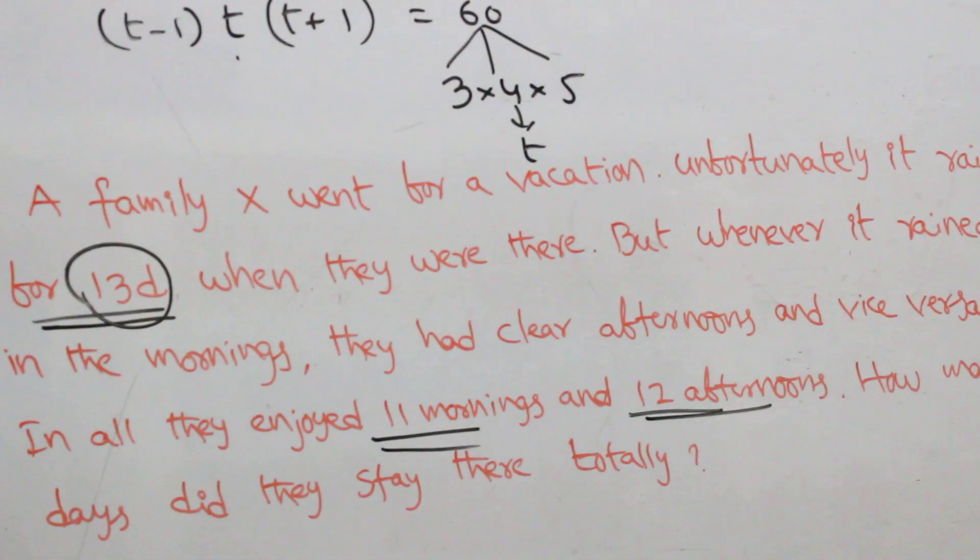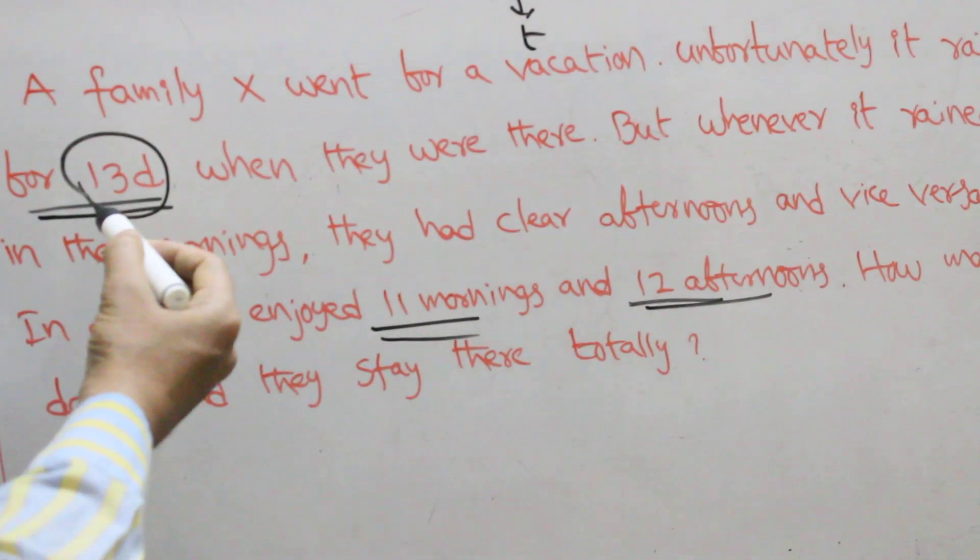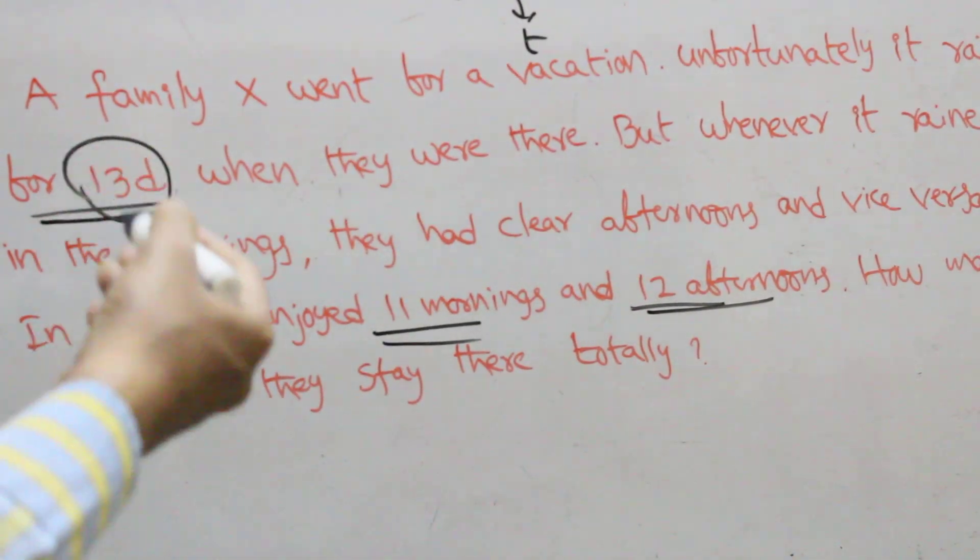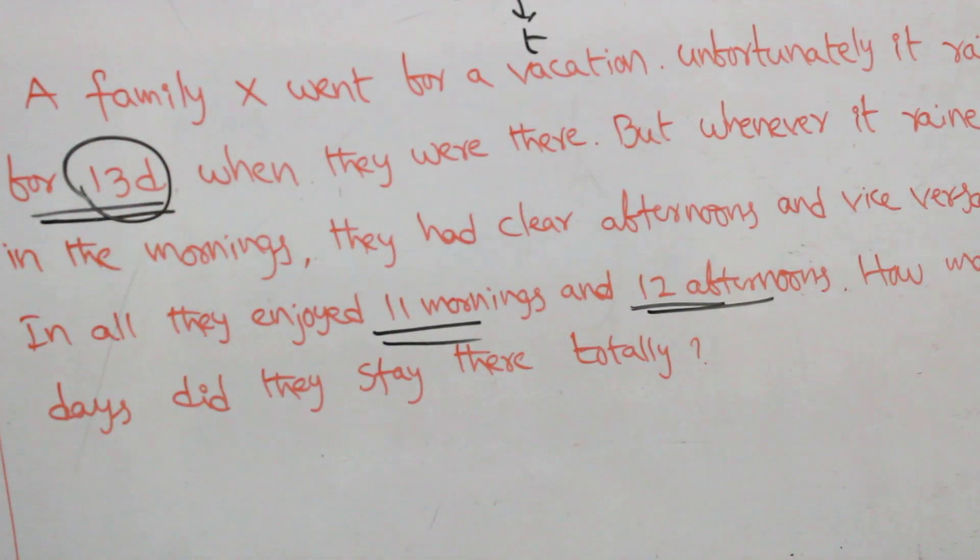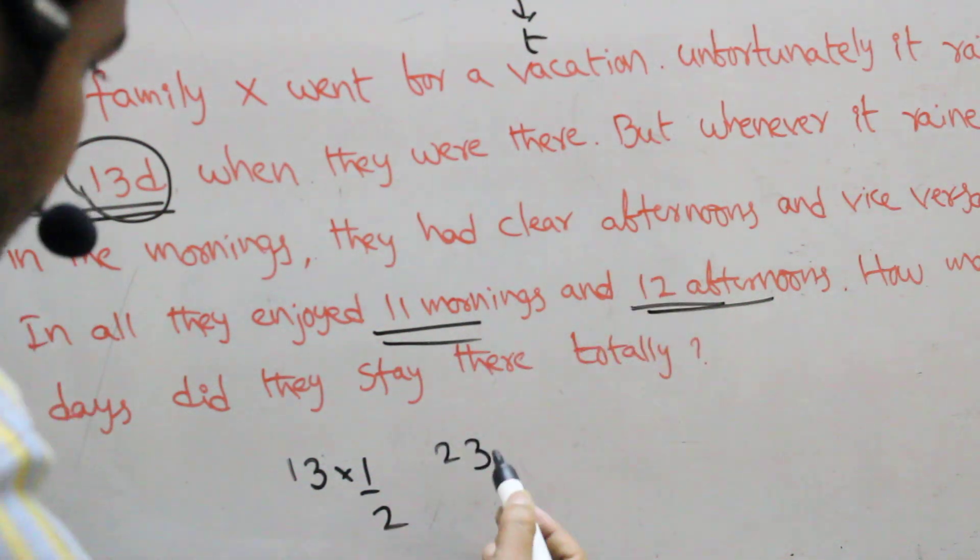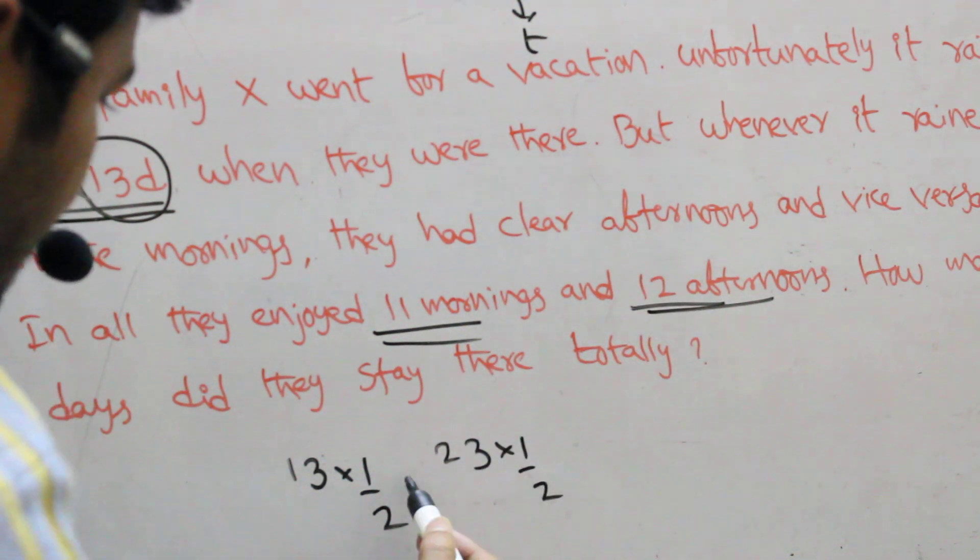In this one, unfortunately they rained 13 days when they were there. But when they are rained in the morning, sometimes afternoons. 13 days, 13 into half days. Next one, 11 mornings, 12 afternoons. How many half days? 23 half days, 11 plus 12, 23 into half, that equals 12 also.